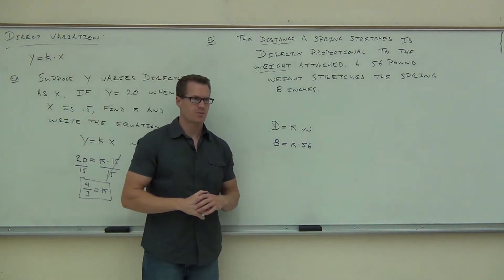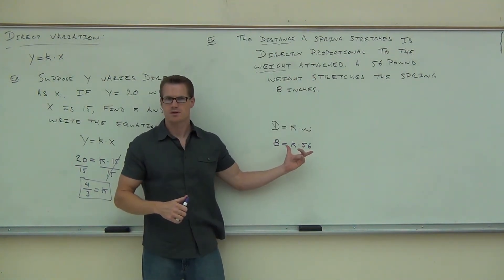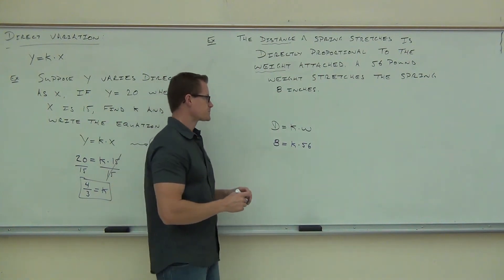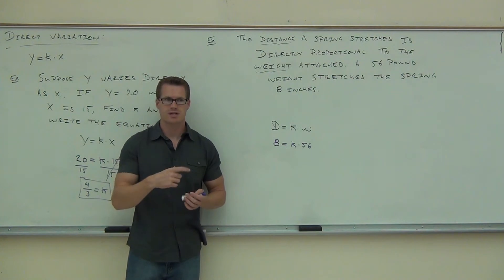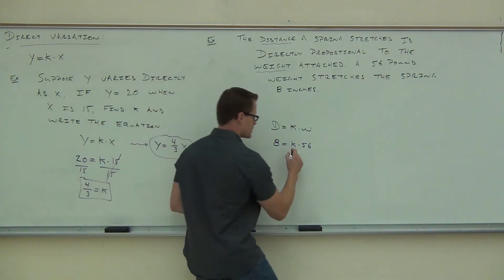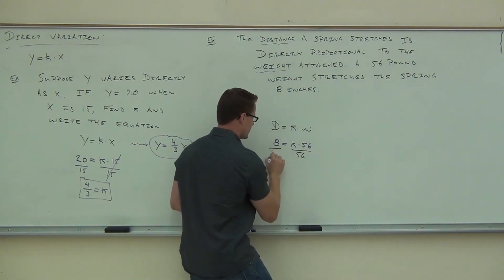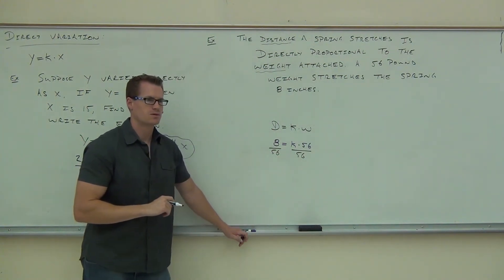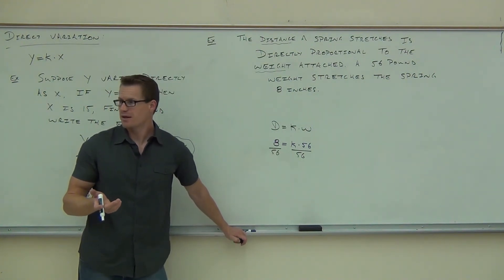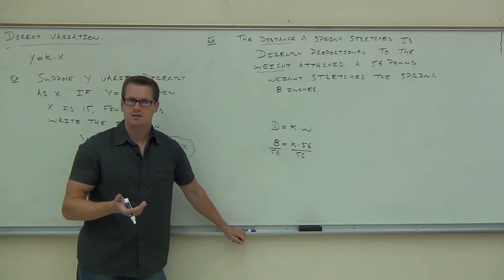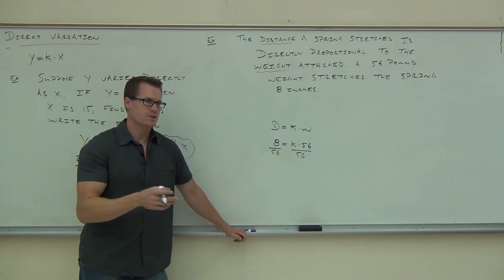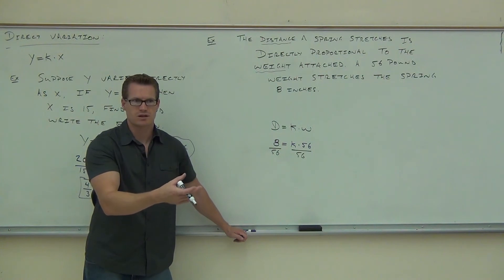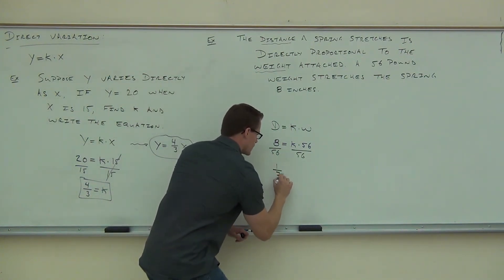Nod your head if you understand how we're getting k from this. Good. What do we need to do to solve for k? Divide by 56 — we need to get k by itself. What's attached to the k? So we divide by 56. Now 8 over 56 — you can simplify that. It's not going to be a whole number, and that's fine. What is 8 over 56? One-seventh. We simplify that fraction to 1/7. So 1/7 equals k.